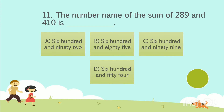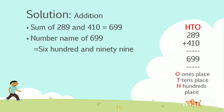Question number 11. The number name of the sum of 289 and 410 is dash. Option A: 692. Option B: 685. Option C: 699. Option D: 654. Your time starts now. The answer is Option C, 699. Sum of 289 and 410 is 699.